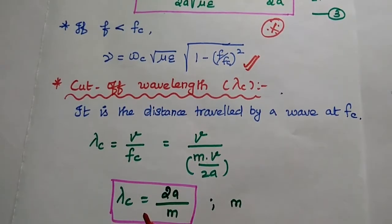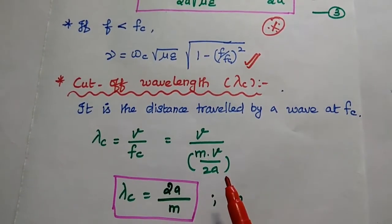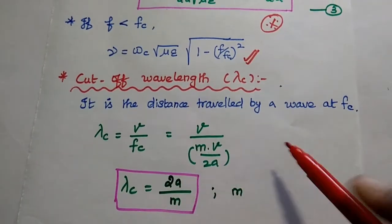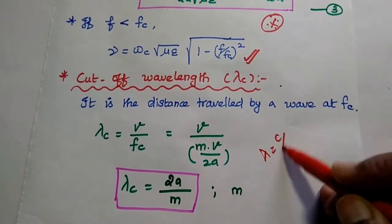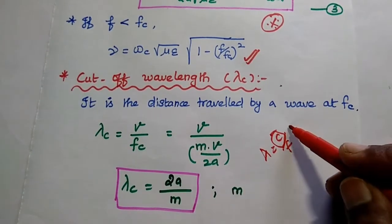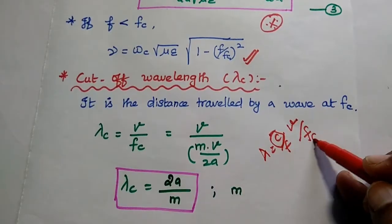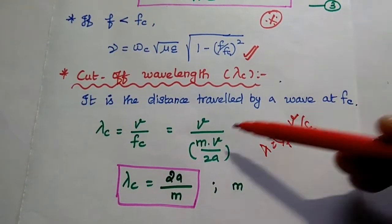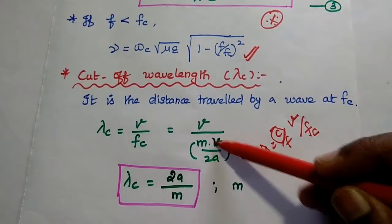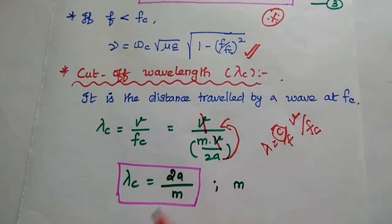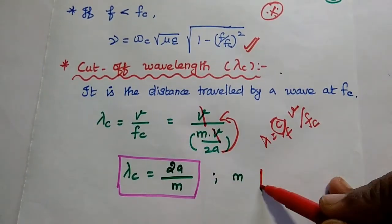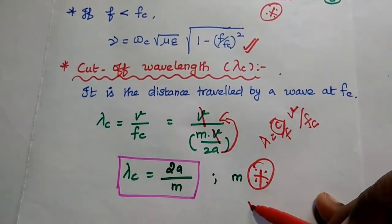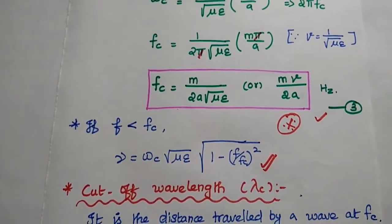Wavelength is the distance travelled by the wave with a phase shift of 2π radians. At cutoff frequency, the wavelength is represented as the cutoff wavelength λc. Since λ = v/fc and fc = mv/(2a), substituting gives λc = v/(mv/(2a)) = 2a/m. This is another important formula to find the cutoff wavelength for TE and TM waves.